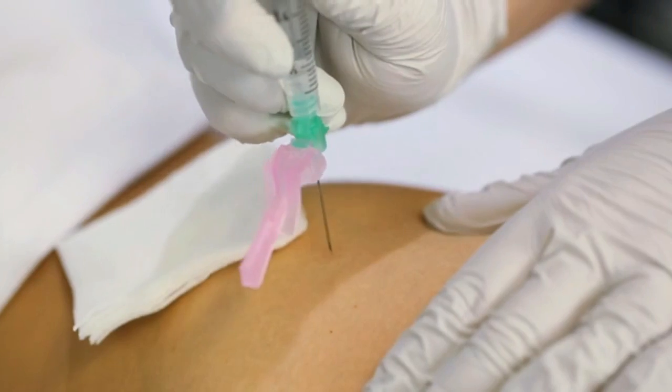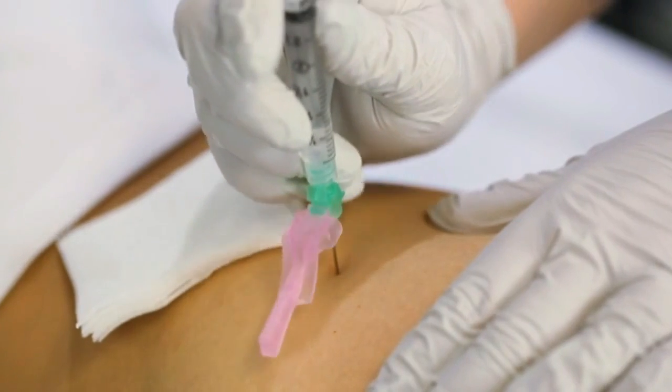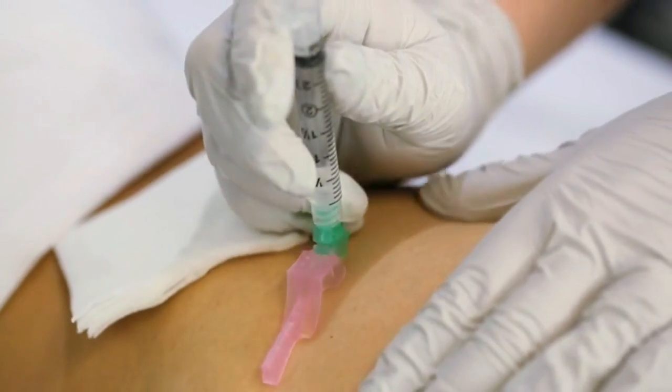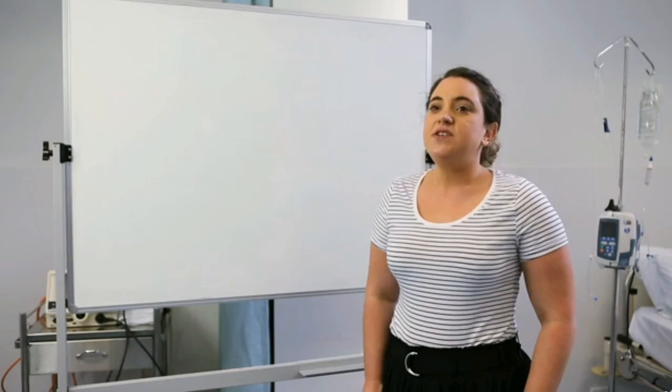Refer to your facility's guidelines or literature for details on general preparation of the patient and equipment for intramuscular injection. Injecting into a tense muscle is more painful, so encourage relaxation of the muscle. For all intramuscular sites, insert the needle at a 90 degree angle.